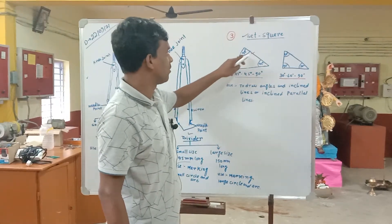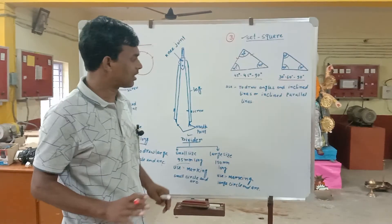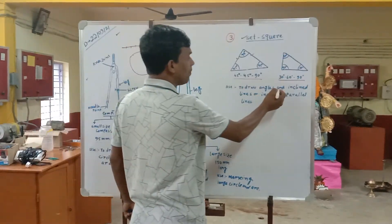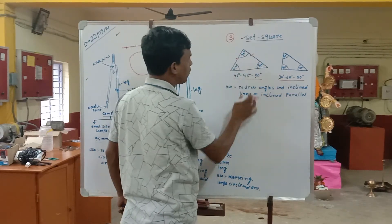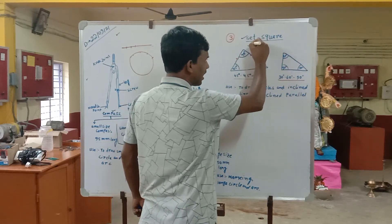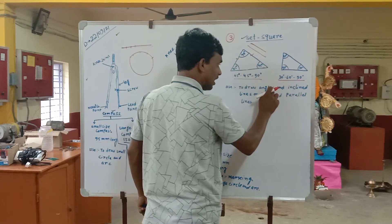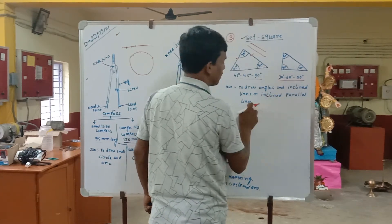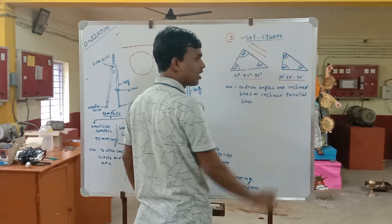We can draw angles equal to 30 degrees, 90 degrees, 60 degrees, 30 degrees, and 15 degrees using set squares. We also use them to draw inclined lines and inclined parallel lines. You can see that by combining the set squares you can draw various inclined lines and inclined parallel lines.